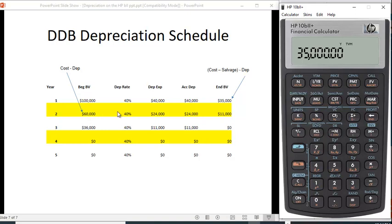So 40% of $60,000 is $24,000. Let's see if that's what it gives us. So two, up arrow key, declining balance, it gives us $24,000. And again, if we want to swap this out, it tells us that the remaining balance is $11,000.